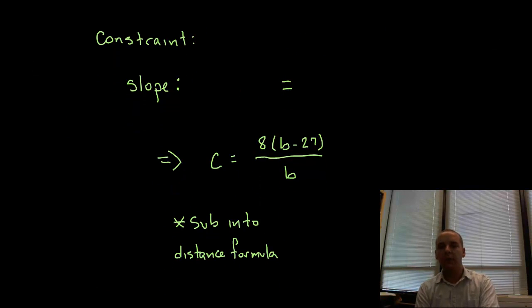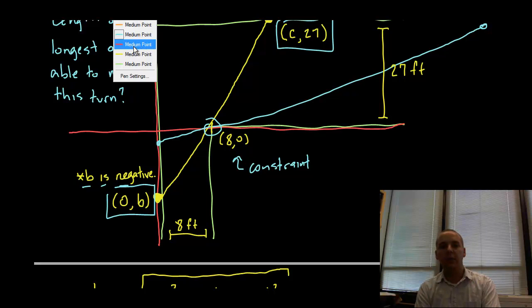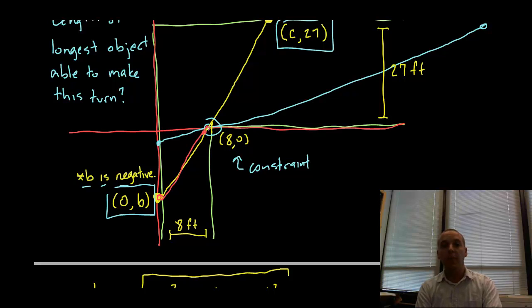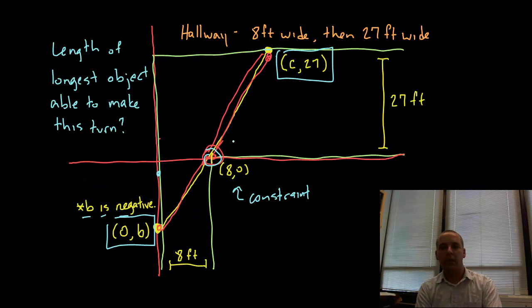So here's where that constraint comes into play. The constraint that we're going to use is the fact that you have to go through this point (8, 0). Now how are we going to express that mathematically? Well one way to guarantee that we go through the point (8, 0) is to ensure that the slope between (0, B) to (8, 0) matches the slope from (8, 0) to (C, 27). If those slopes are the same, then it has to go through the point (8, 0) here. If you had your (0, B) right here, well then the slope between that point and (8, 0) would not be the same as the slope between (8, 0) and (C, 27). So obviously those would not be the same, but if we're going to assume by common sense that the optimal length will actually go through this point (8, 0), then it's safe to assume that this slope would match the entire slope here.